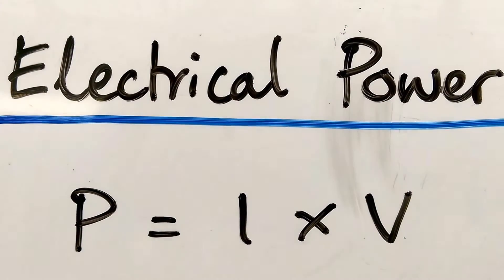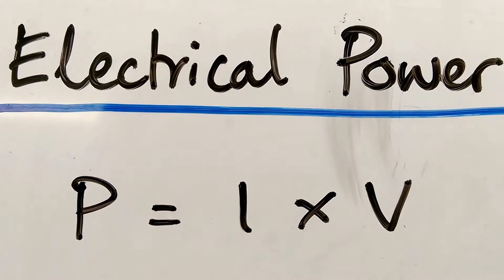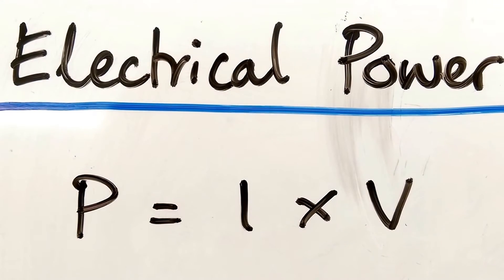I'm going to talk about electrical power. Power is current times voltage, or P is I times V.